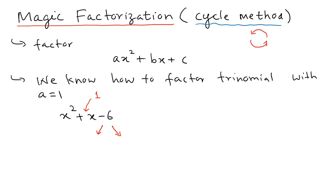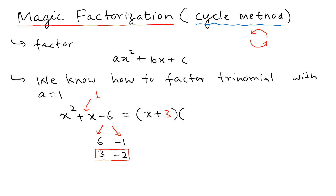We can see that because it's negative 6, the two numbers should have different signs. We can try 6 and negative 1, but those add up to 5, so that doesn't work. Then we try 3 and negative 2 — those multiply to negative 6 and add to positive 1. So the factorization is (x + 3)(x − 2). You just pick the two factors that add up to the middle coefficient.